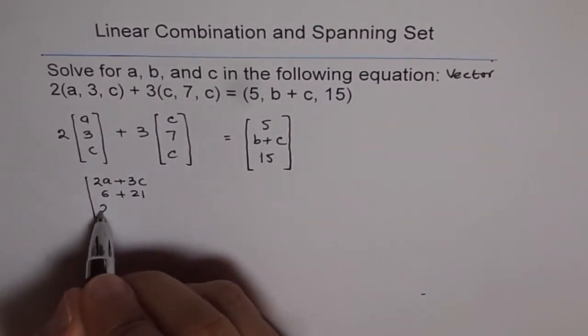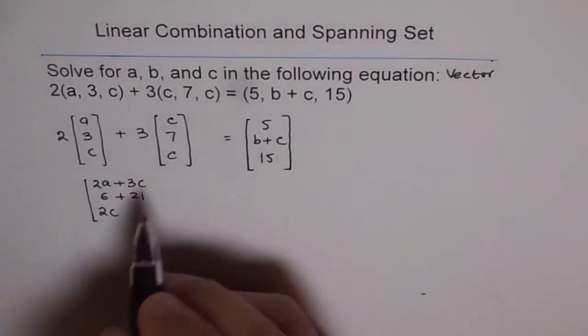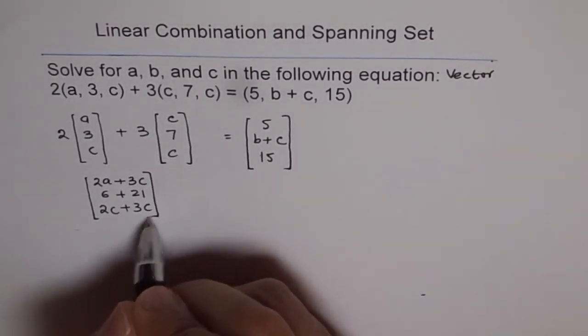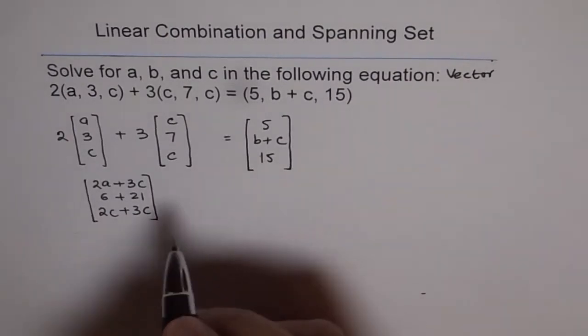Now, 2c plus 3 times c plus 3 times c. That is what we get after doing scalar multiplication of vectors.